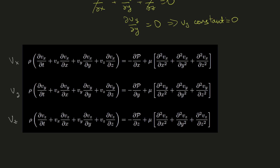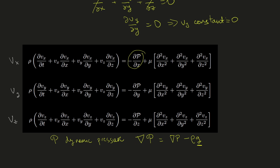This version of the Navier-Stokes equation uses the dynamic pressure, sometimes written as script P. The gradient of dynamic pressure equals the gradient of normal pressure minus rho*g, where g is the gravity vector. By using dynamic pressure, we eliminate the need to track the direction of gravity, so we can solve the problem once and the solution applies regardless of how the plates are oriented.